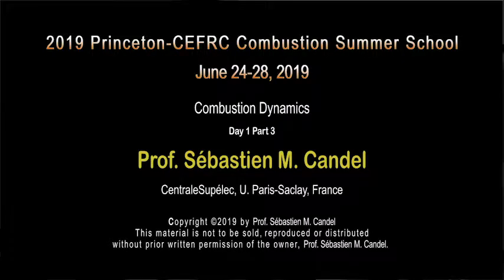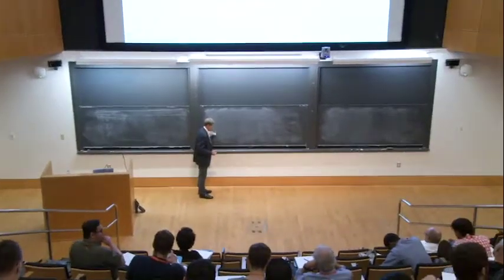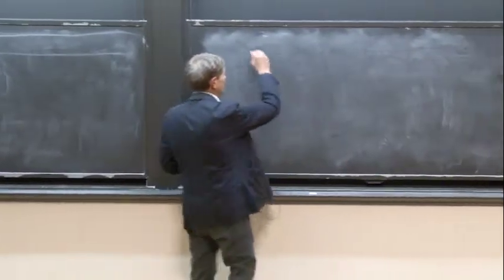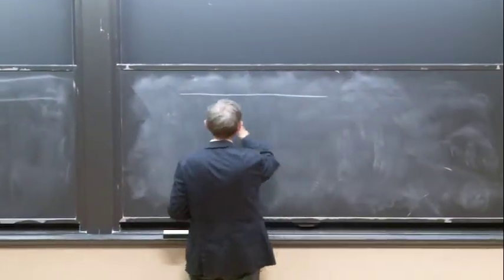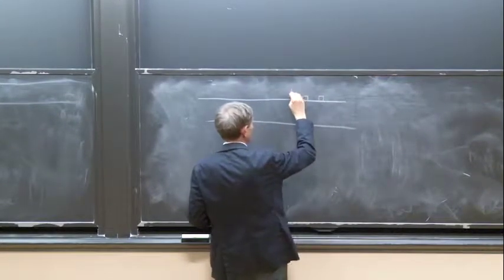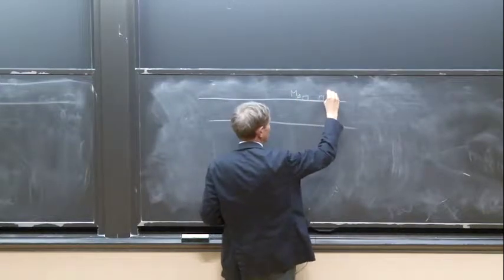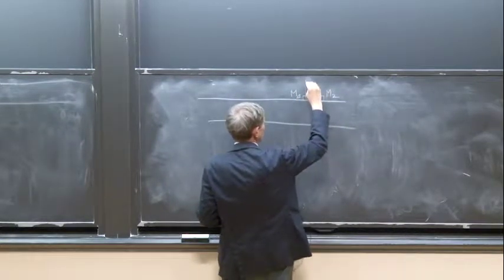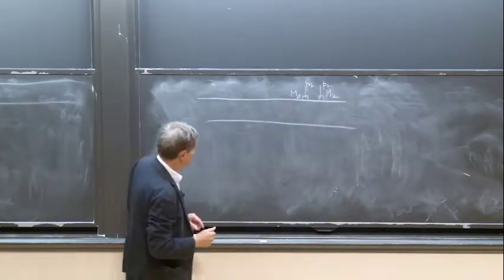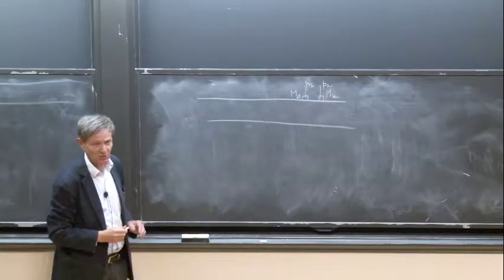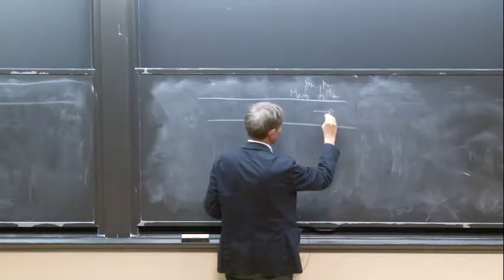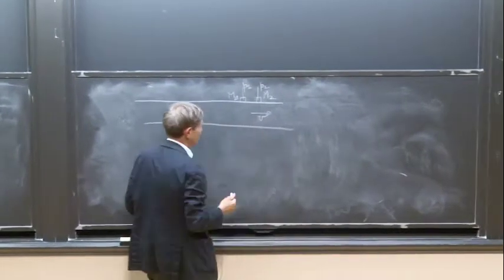One method to calculate the velocity in a duct — the acoustic velocity — is the two-microphone method. You have two microphones, M1 and M2, each measuring a pressure, P1 and P2. From that information, you want to get the velocity in the middle. What is the velocity that is obtained?